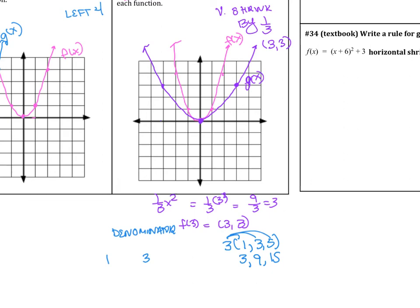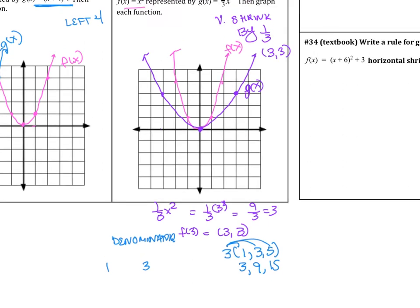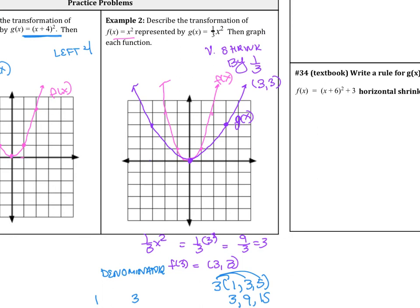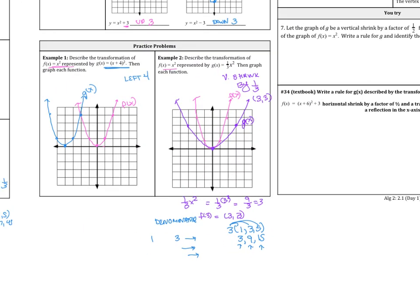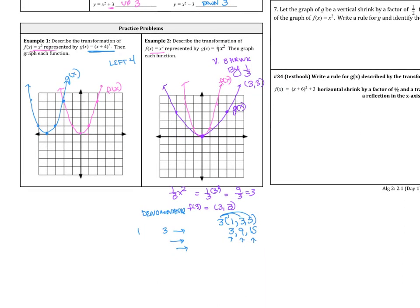So this is going to be 3, 3 times 3 is 9, 3 times 5 is 15. So what this means, if you have a vertical shrink, you could do this pattern as well. If you want to follow the 1, 3, 5. We have to plug in multiples of 3 because of the denominator of 3, so that way it'll cancel out. So that's why I'm using this denominator of 3.